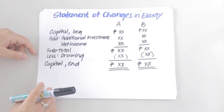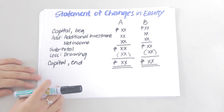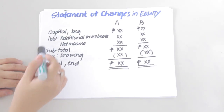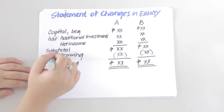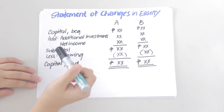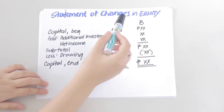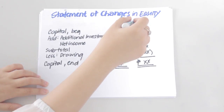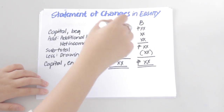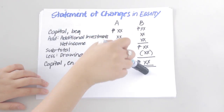For the statement of changes in equity, it has the same components as that of a sole proprietorship, but the difference is that you have to add a separate column for each of the partners.